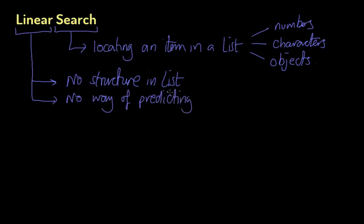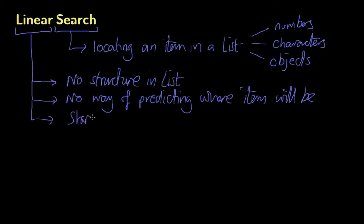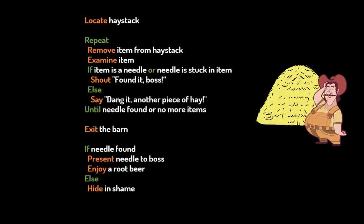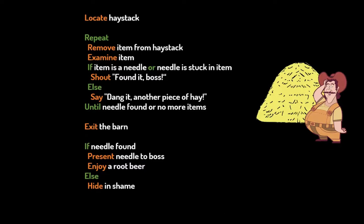There's no way of predicting where the item will be. The basic strategy is: start at the beginning and keep going until the end. If you find it, great; if you don't, not so great, but that's how it works. Let me show you an example — it's a slightly contrived example, but it's algorithmic, so we can write it down as a set of unique steps. If you ever did need to locate a needle in a haystack, this is probably how you'd do it. I'd suggest you pause the video for about 30 seconds and read through it.